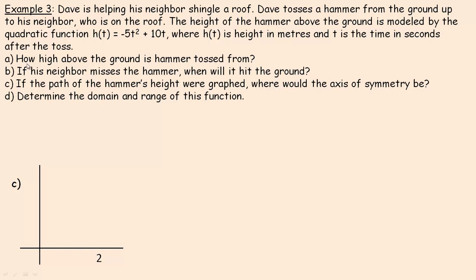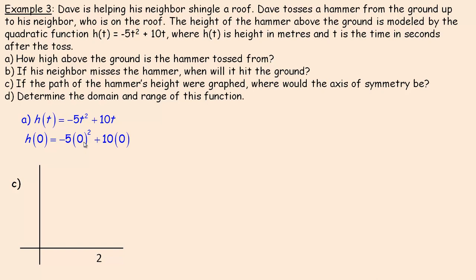Question A: how high above the ground is the hammer tossed from? When it's tossed is at the beginning of the domain — a time of zero. We substitute 0 in place of t: h(0) = -5(0)² + 10(0) = 0. So the hammer was tossed from the ground — height zero.